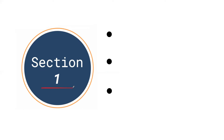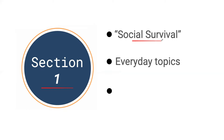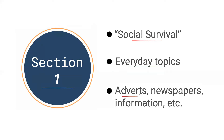We'll be in section one today with our example with the word bank. Section one for the general reading exam is basically called social survival — it covers everyday topics like advertisements, newspapers, or information about a university or school. It's the kind of content you would need to live day by day in an English-speaking country. Let's get started with our example.